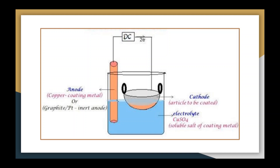Direct current from an external power source is passed through the electrolytic solution. In the diagram, I have shown the DC power source. The electrolyte is an aqueous solution of acid — it may be based on a salt. The electrolyte conducts the current by the movement of plating metal ions in the solution. For optimum results, the part to be plated should be chemically clean.